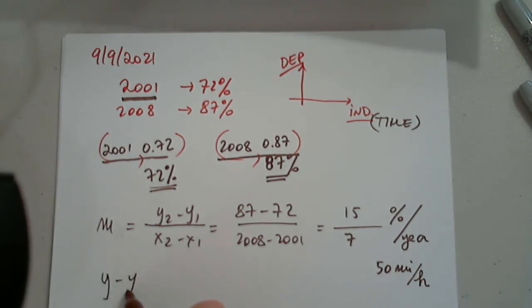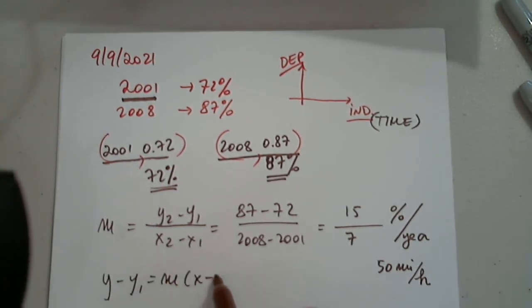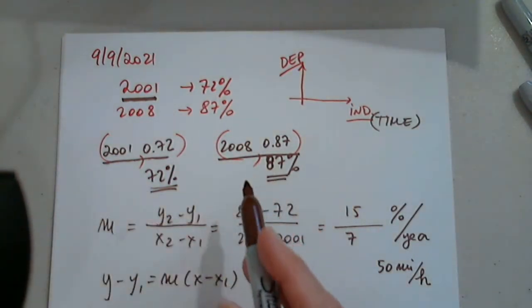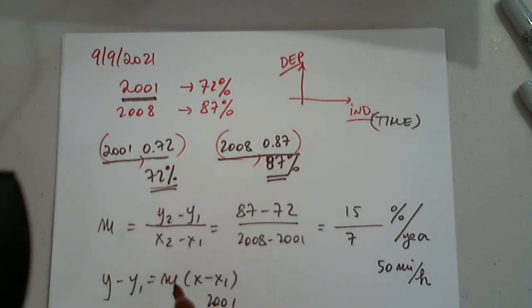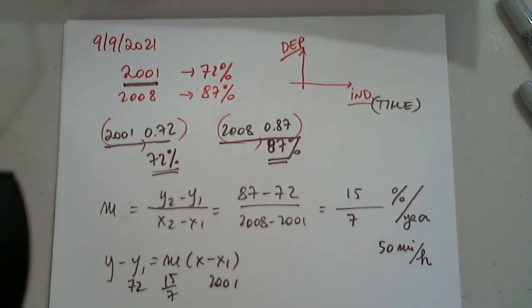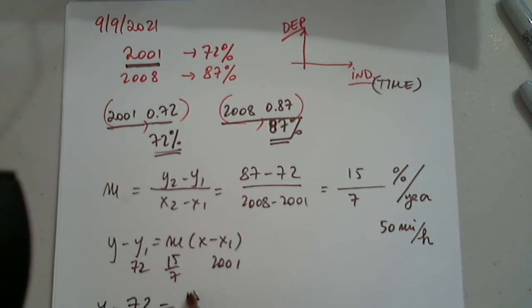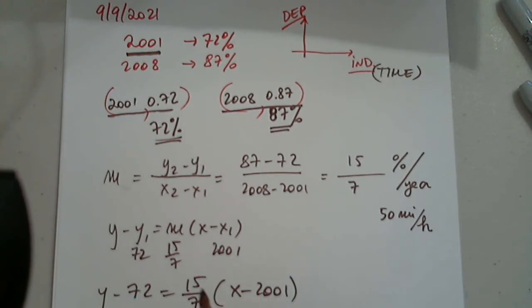After this, I have y minus y1 equals the slope times x minus x1, in which I pick any point, it doesn't matter, 2001 and 72 and 15 divided by 7. So then y minus 72 equals 15 over 7 times x minus 2001.